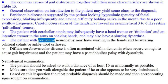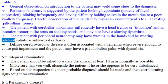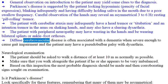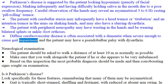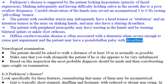The patient with peripheral neuropathy may have wasting in the hands and be wearing bilateral splints or ankle-foot orthoses. Diffuse cerebrovascular disease is often associated with a dementia when severe enough to cause gait impairment, and the patient may have a pseudobulbar palsy with dysarthria.